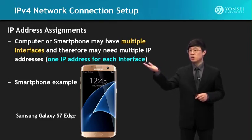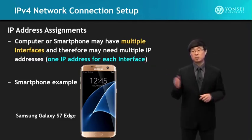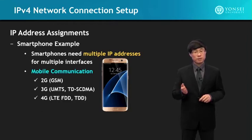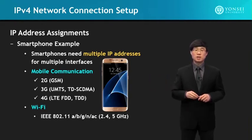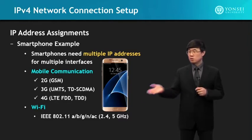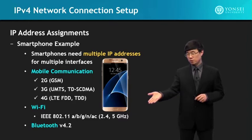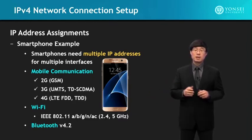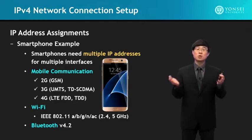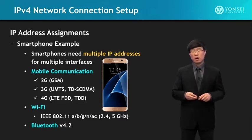For example, looking at a Samsung Galaxy S7 Edge device, it has multiple interfaces. For mobile communication, it has 2G, 3G, and 4G connections. For Wi-Fi, it has IEEE 802.11 A, B, G, N, and AC modes, supporting 2.4 and 5 GHz frequency ranges. In addition, Bluetooth 4.2 is also on this device. Therefore, each of the interfaces needs a separate IP address — a single device can consume a lot of IP addresses to support all of its connectivity.